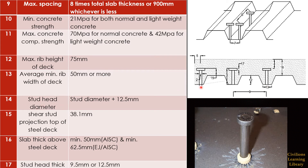The stud head diameter should be equal to the stud diameter plus 12.5 mm thick. The shear stud should project at least 38.1 mm from the top of the steel deck. The slab thickness above the steel deck should be at least 50 mm per AISC, or 62.5 mm per the engineering journal. Note that while minimum cover is 25 mm, the minimum slab thickness above the steel deck from the deck to the top is 62.5 mm. Finally, the stud head thickness should be 9.5 mm or 12.5 mm.